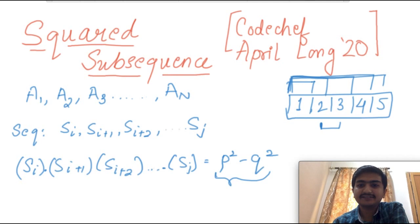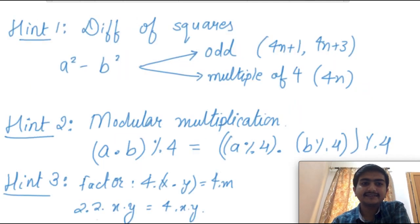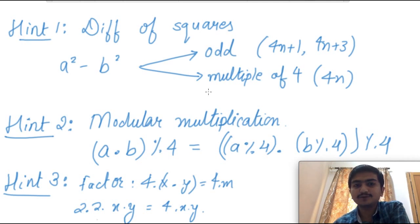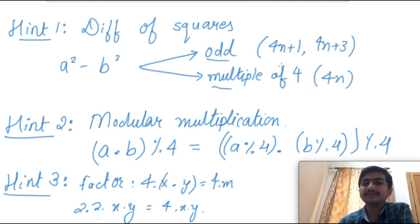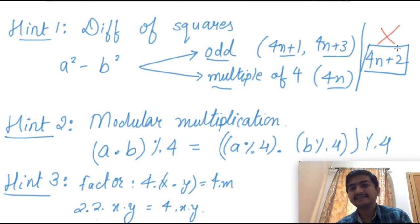This question requires some observations. The first hint is about the difference of two squares. Any difference of two squares is either an odd number or a multiple of 4. So it can be of the form 4n+1, 4n+3, or 4n. It cannot be of the form 4n+2. So the only form which cannot be expressed as a difference of two squares is 4n+2.